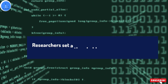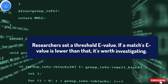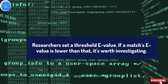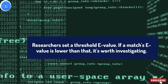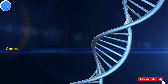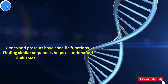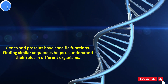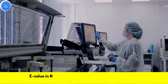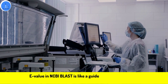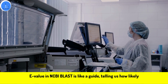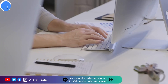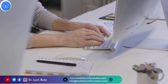So why is the e-value important? Think of it as a filter. Researchers set a threshold e-value — if a match's e-value score is less than that, it's worth investigating. Genes and proteins have specific functions, and finding similar sequences helps us understand their role in different organisms. The e-value in NCBI BLAST is like a guide, helping scientists separate the signal from noise in the vast genetics and proteomics landscape.